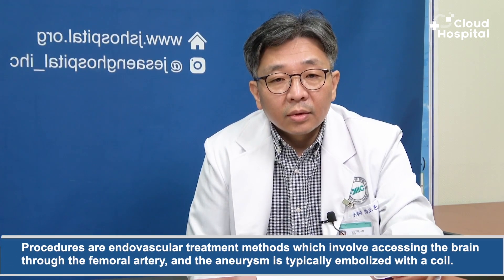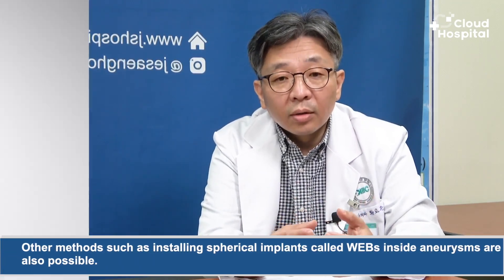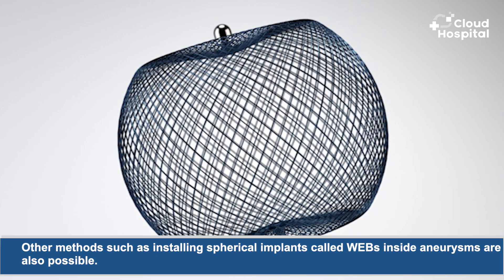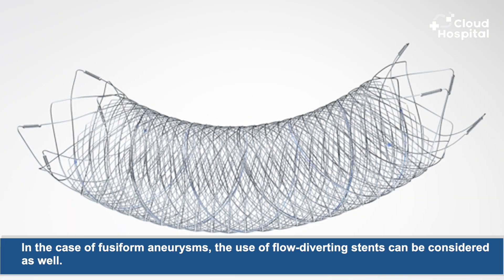Endovascular procedures involve accessing the brain through the femoral artery, and the aneurysm is typically embolized with a coil. Other methods such as installing spherical implants called WEBs inside aneurysms are also possible. In the case of fusiform aneurysms, the use of flow-diverting stents can be considered as well. Most cerebral aneurysms are treated through procedures nowadays, as they are preferred by both patients and medical staff.